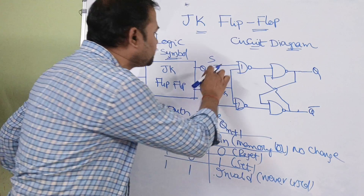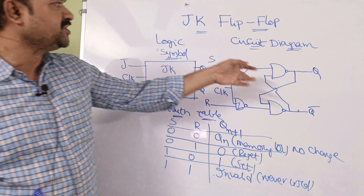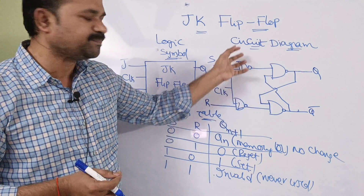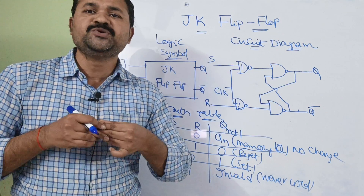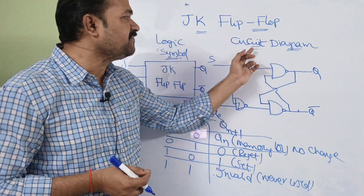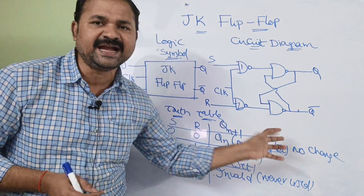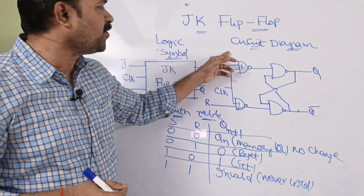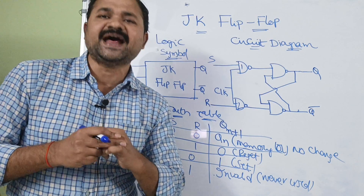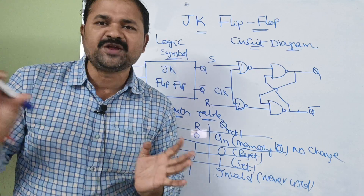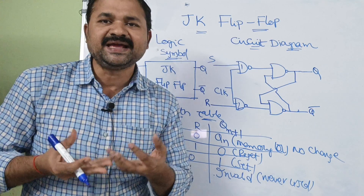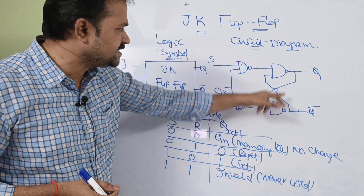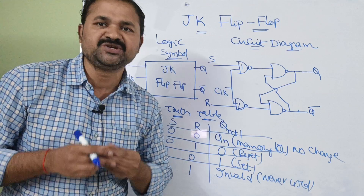Now, let us see the circuit diagram for the JK flip-flop. If we observe here, this is the circuit diagram for SR flip-flop using NAND gate. The JK flip-flop using NAND gate circuit diagram is similar to SR flip-flop circuit diagram using NAND gate, but some slight modifications are needed. This part is nothing but SR latch using NAND gate.